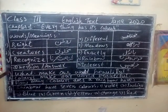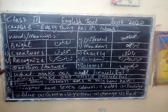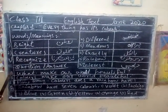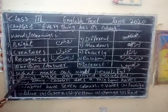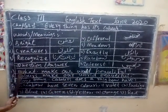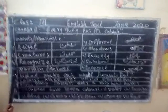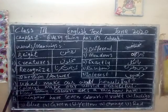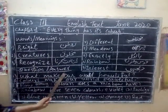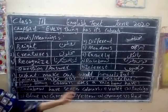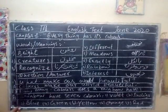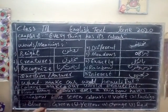And now for Question and Answer. Question number 1: What makes our world beautiful? The answer is: Colors make our world beautiful.